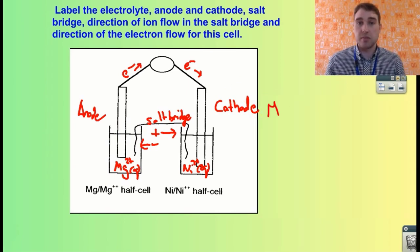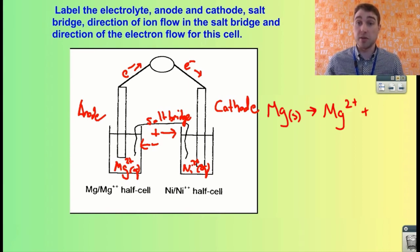So we're starting with magnesium, and oxidation is loss, so the magnesium is losing two electrons. And the magnesium is going into solution as magnesium ion, so it's going in as Mg2+ aqueous.